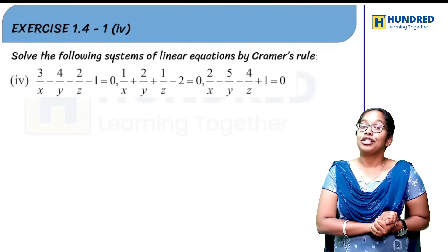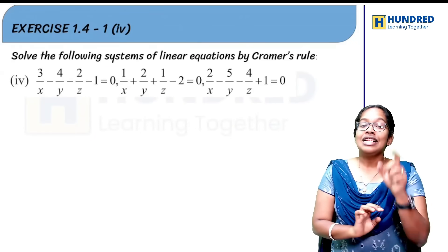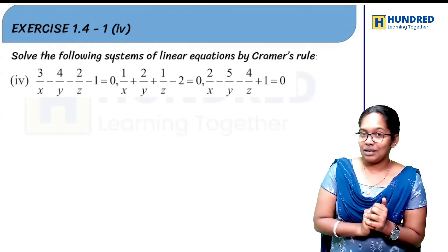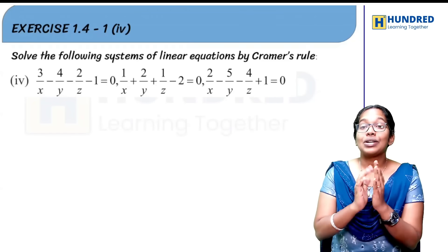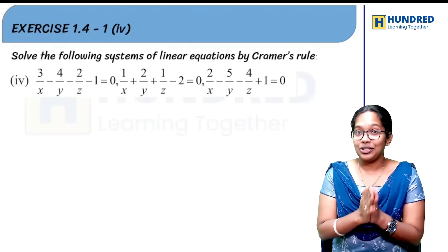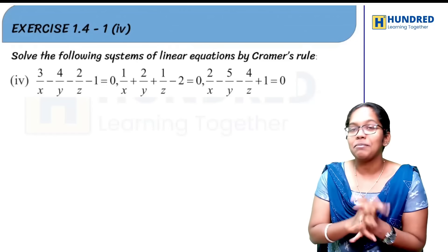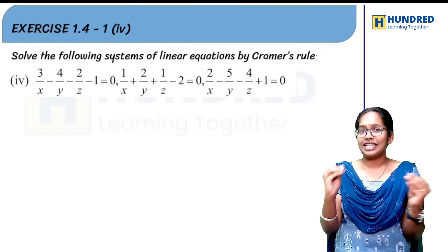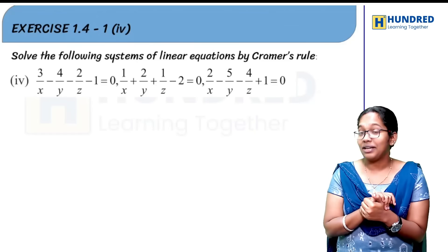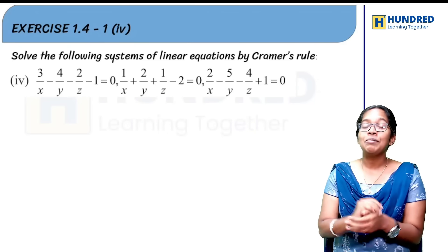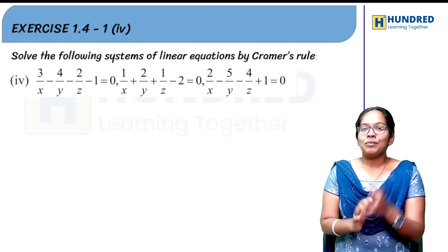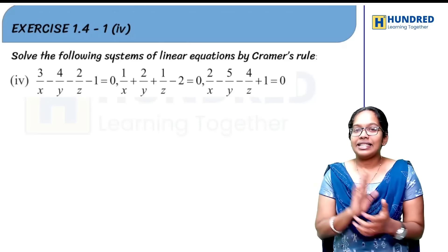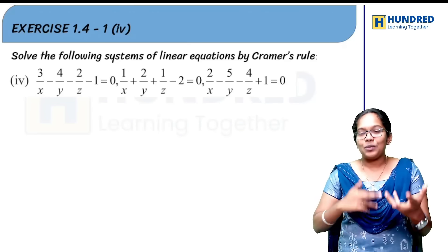In Exercise 1.4, in the first question, there is a fourth subdivision. Using Cramer's Rule, find the solution — system of linear equations, solve it. What do you do? 1/x, 1/y, 1/z. It is a third order system of linear equations.